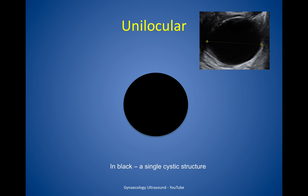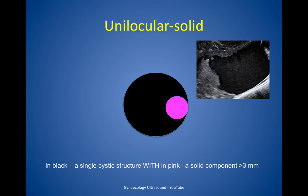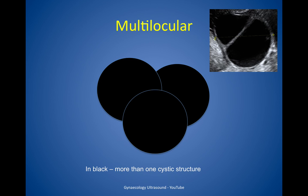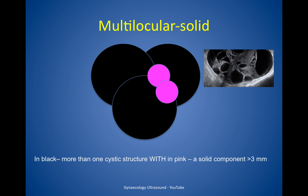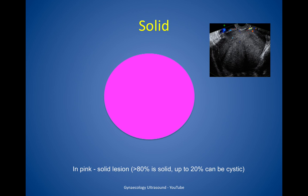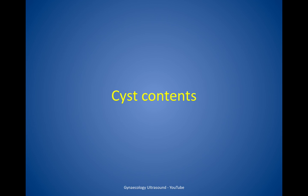Taking these criteria one at a time — locularity. A unilocular cyst is a single cystic structure. A unilocular cyst with some solid material is therefore unilocular solid. A multilocular lesion has more than one cystic structure, and if any solid material is present that makes it multilocular solid. An entirely solid lesion requires around 80% of it to be solid; up to 20% can be a cystic component.